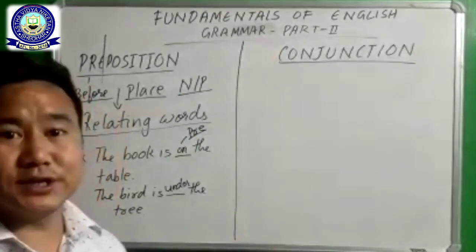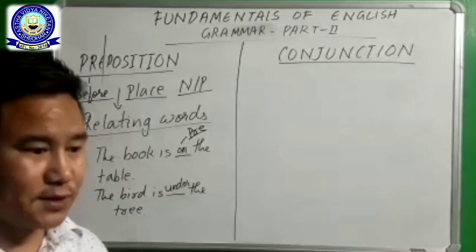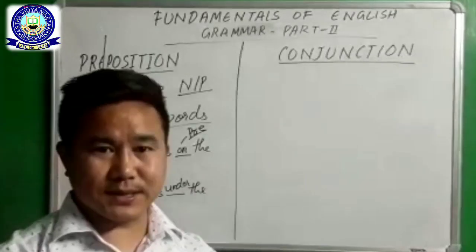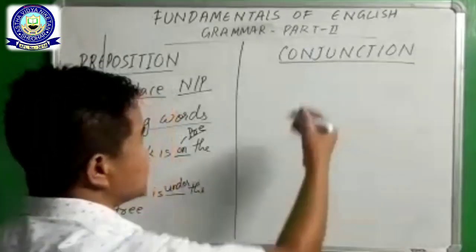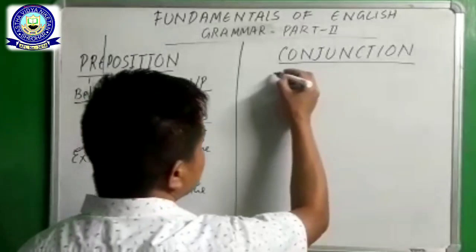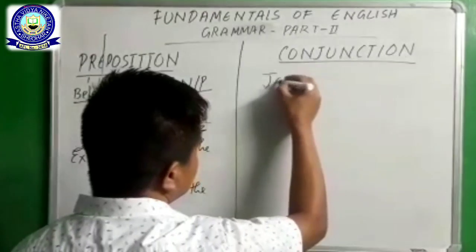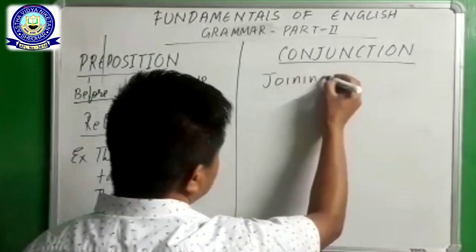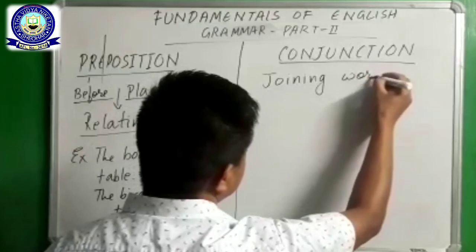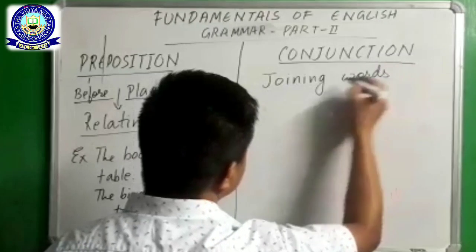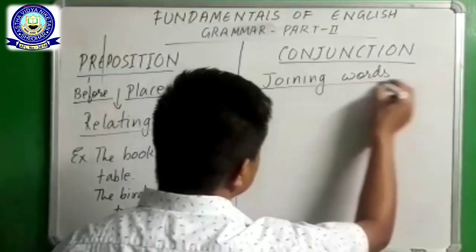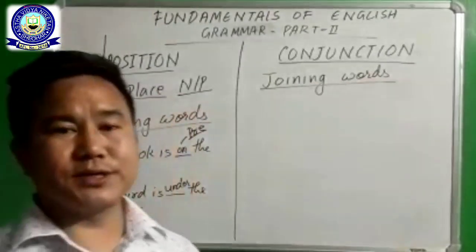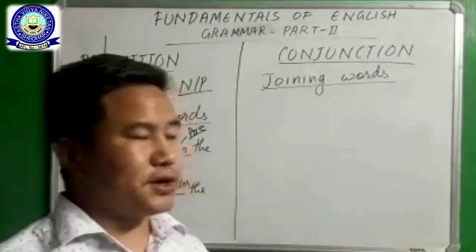On the other hand, conjunction. What do you mean by junction? Junction is a meeting place. So conjunction means joining — they are joining words. We say that conjunctions are joining words.